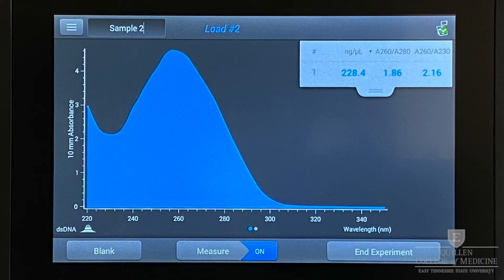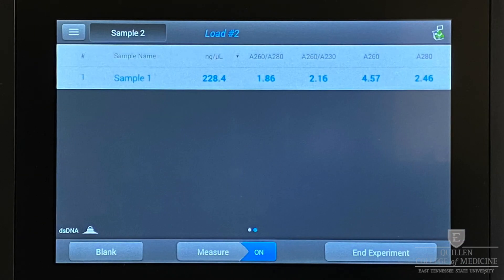While absorbance at 230 indicates organic compounds such as phenol are present, the ratio of 260 to 280 absorbance is indicative of each sample type. Scrolling right allows us to see the measurement for each of these absorbance values.